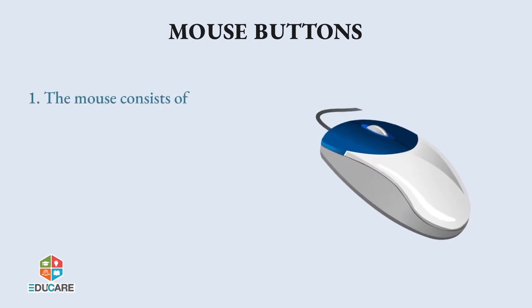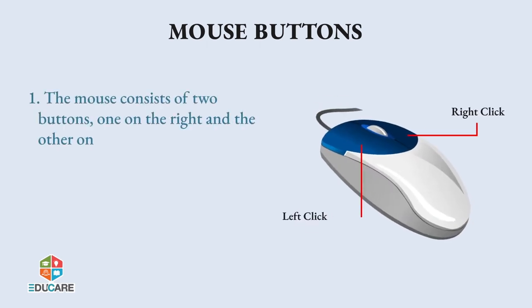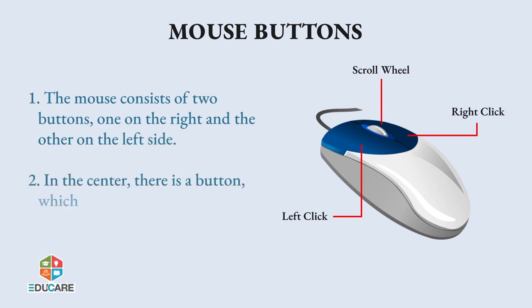Mouse buttons: The mouse consists of two buttons — one on the right and the other on the left side. In the center, there is a button which looks like a wheel. This button is called the scroll wheel.